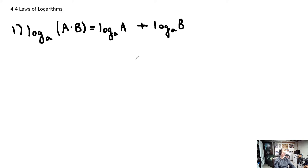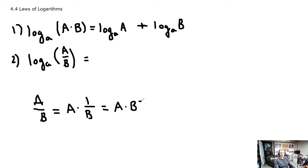Okay, what is the second law? Well, it's similar, very similar to this. And it is based on quotients instead. Log base a of a quotient, A over B. What do you think that's going to equal? Well, it's kind of a leading question. Well, let's look at A over B real quick. Well, that's the same as A times 1 over B. Well, that's the same as A times B to the negative first.